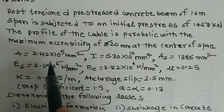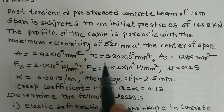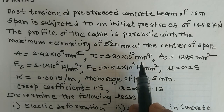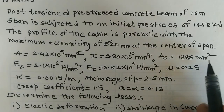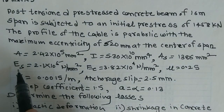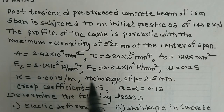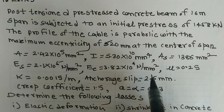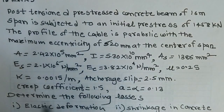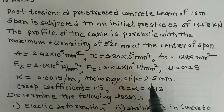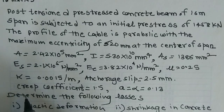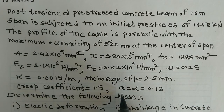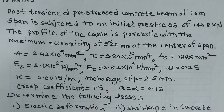The given data: cross-sectional area of the beam is 2.42 × 10⁵ mm², moment of inertia is 5.30 × 10¹⁰ mm⁴, area of steel is 1386 mm², Young's modulus of steel is 2.1 × 10⁵ N/mm², Young's modulus of concrete is 3.82 × 10⁴ N/mm², mu = 0.25, k = 0.0015 per meter, anchorage slip = 2.5 mm, creep coefficient = 1.5, and alpha = 0.13.